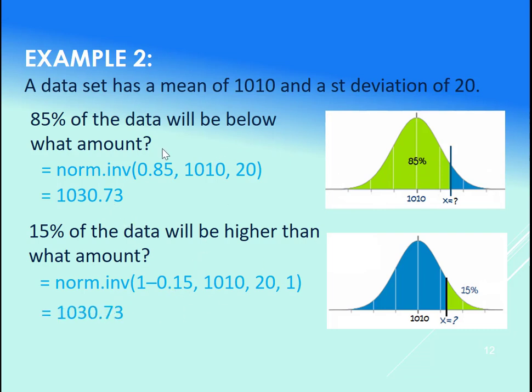So we're going to get the same x value. But again, if we want the x value related to an area to the left, plug in that area, NORM.INV. If we want the x value related to an area to the right, do 1 minus that area within the NORM.INV. And let's try this out in Excel.